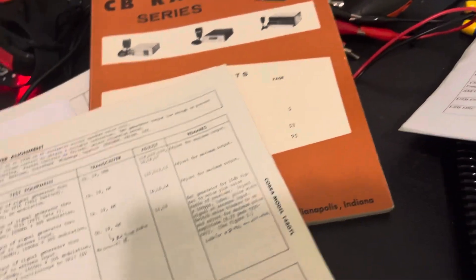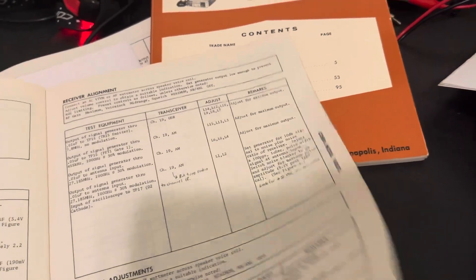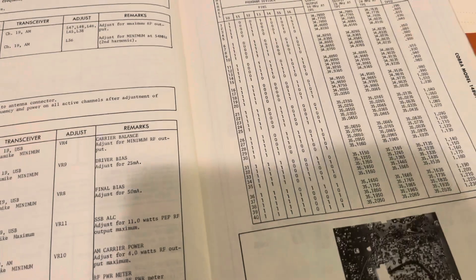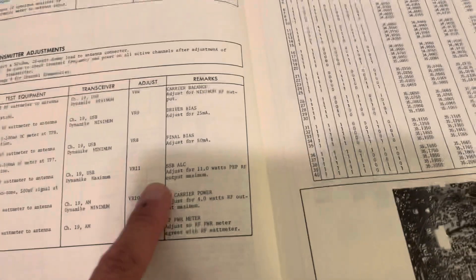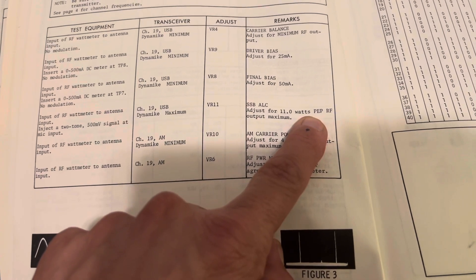If you look at Sam's manual for a Cobra 148, we see the same thing. Here we go, SSB ALC, 11 watts peak, PEP.